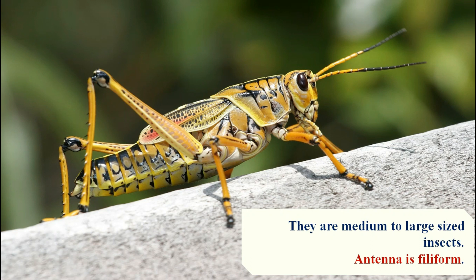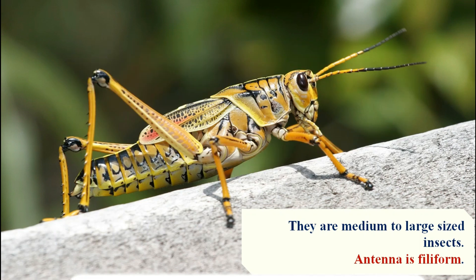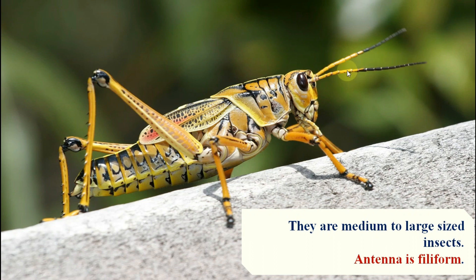A question may come: briefly describe the characteristics of Order Orthoptera with examples. From the picture, you can identify key points. First, they have filiform antennae. They have one pair of compound eyes and three simple eyes. They have mandibulate mouth parts, specifically the hypognathous type. They have a saddle-shaped pronotum, just like a saddle on a horse.